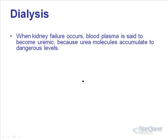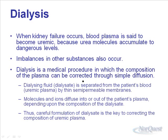Dialysis is our attempt to replicate the function of the kidney. When kidney failure occurs, blood plasma becomes uremic because urea molecules accumulate to dangerous levels, other substance imbalances occur, sodium ion concentrations are disrupted, and blood pressure can vary widely. Dialysis is a medical procedure in which plasma composition is corrected through diffusion — dialyzing fluid is separated from the patient's blood by a thin semi-permeable membrane, and molecules diffuse into or out of the plasma depending on the composition of the distillate.